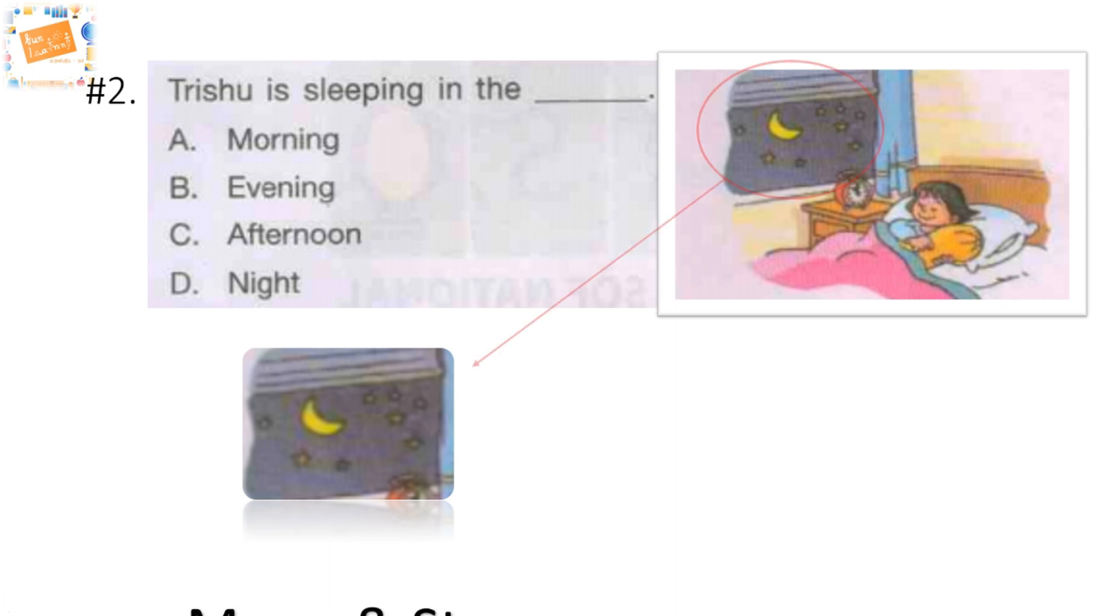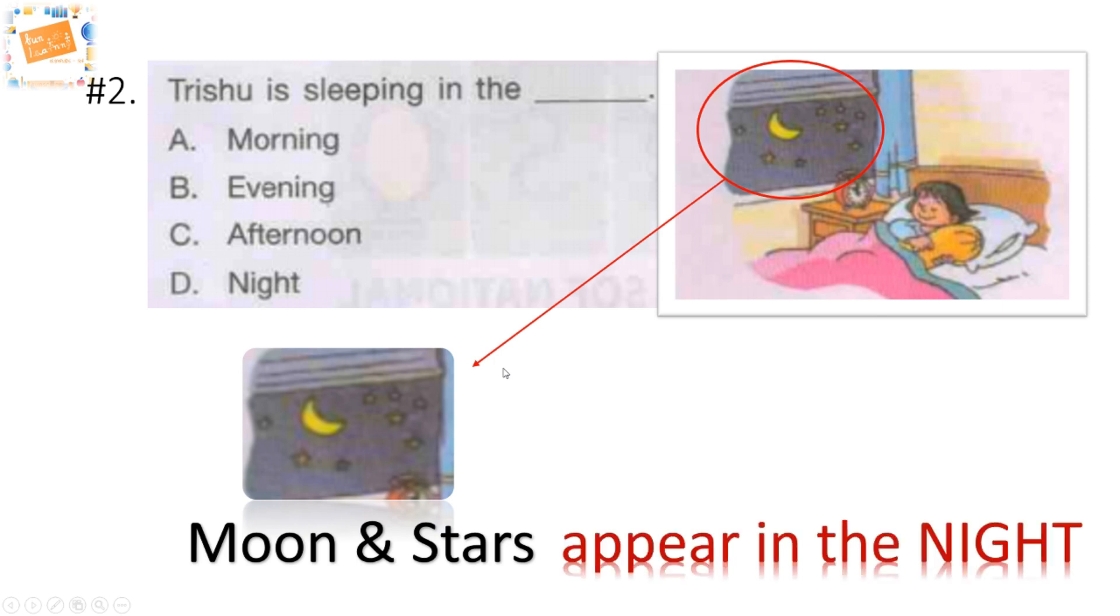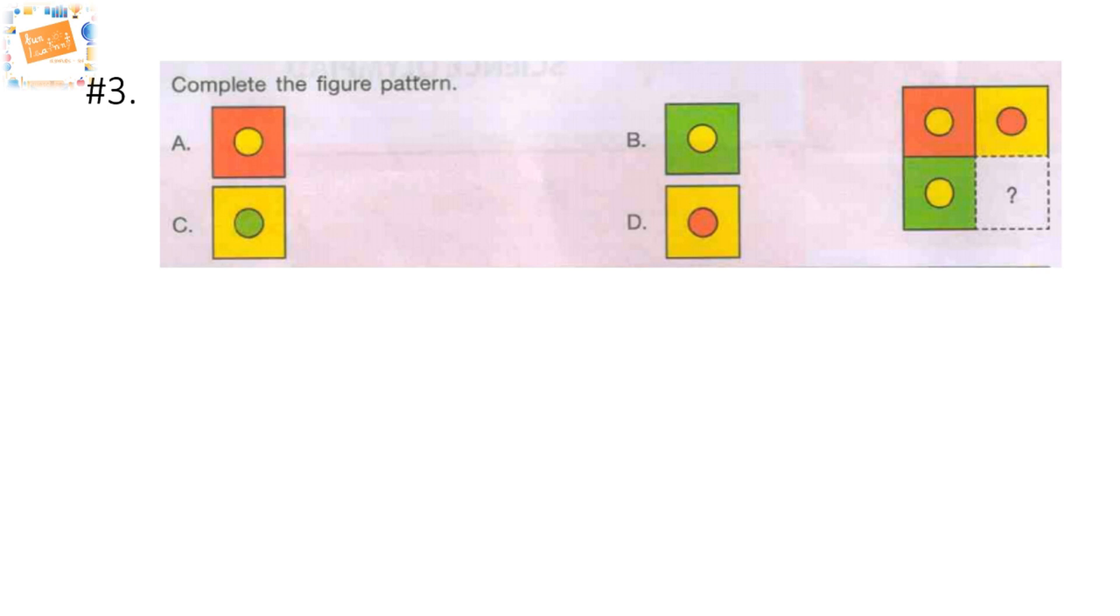Now let's look at Trishu's window. What do we see? We see the moon and stars, and when do the moon and stars come? They appear at night. So Trishu is sleeping in the night. So our option is option D.